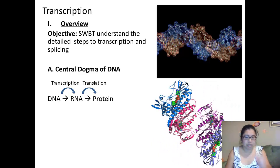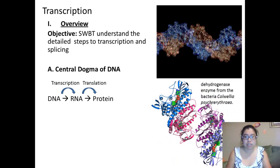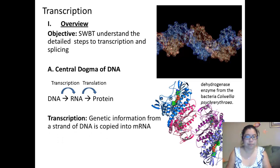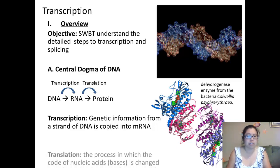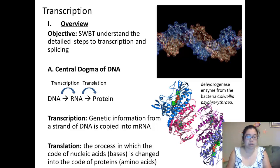And when it gets to protein, this is the 3D structure of the hydrogenase enzyme from the bacteria Coelwellia psychrothelia. Transcription is defined as genetic information from a strand of DNA being copied into mRNA. Translation is the process in which the code of the nucleic acids, which are also named bases, is changed to the code of proteins, which are also called amino acids.